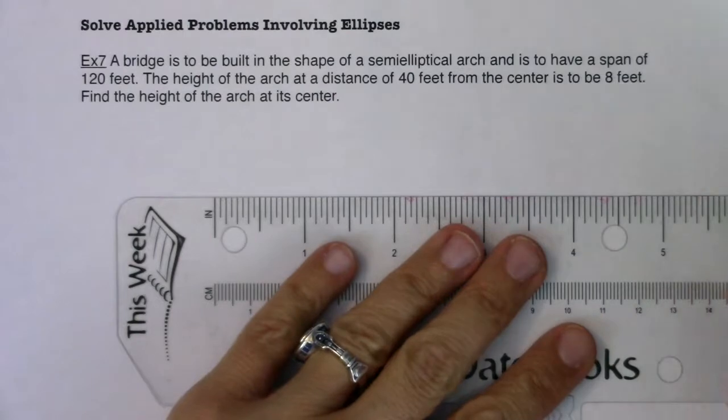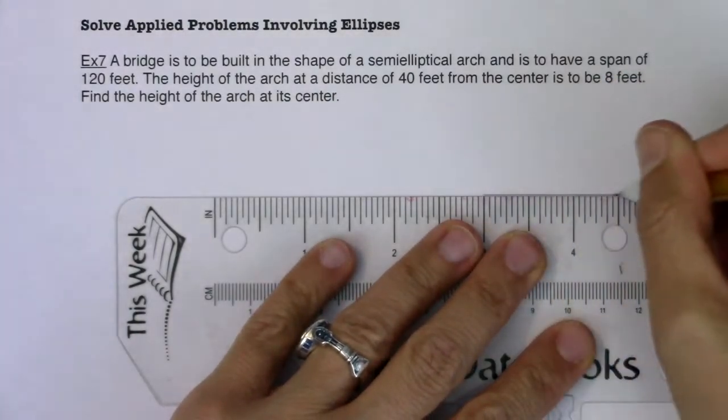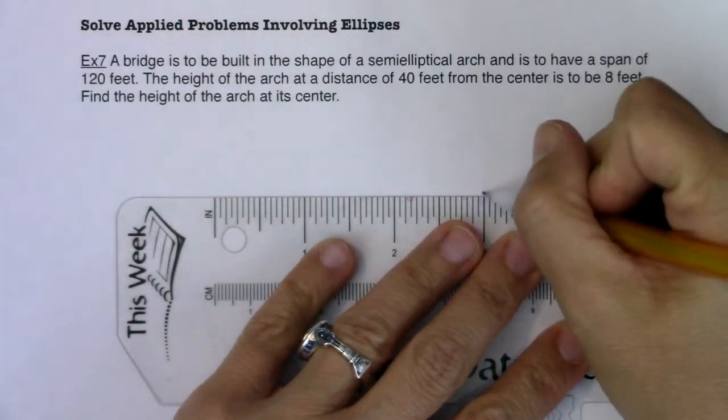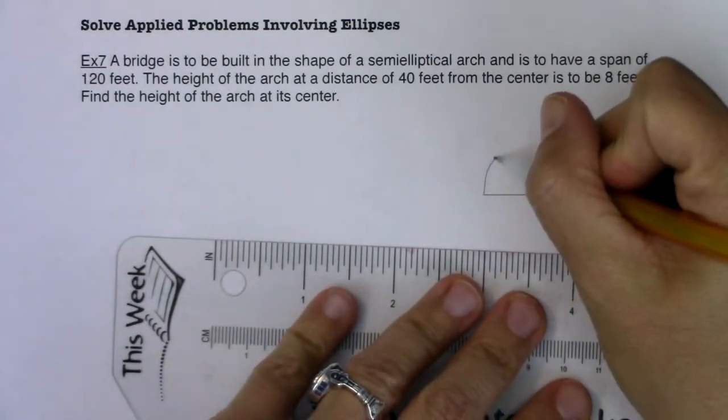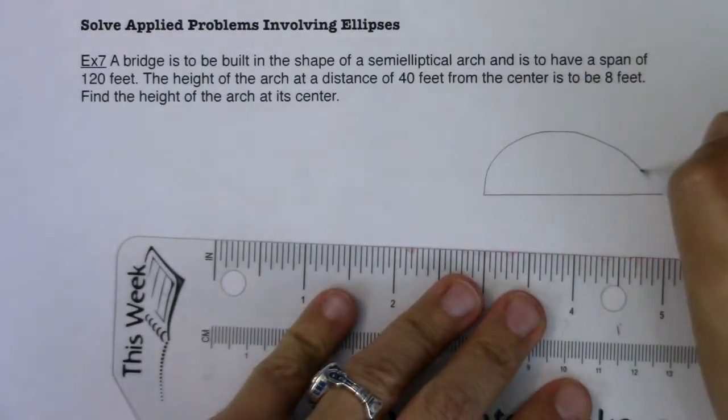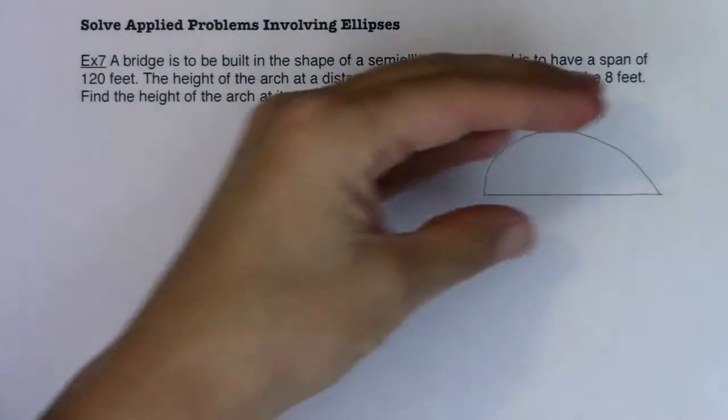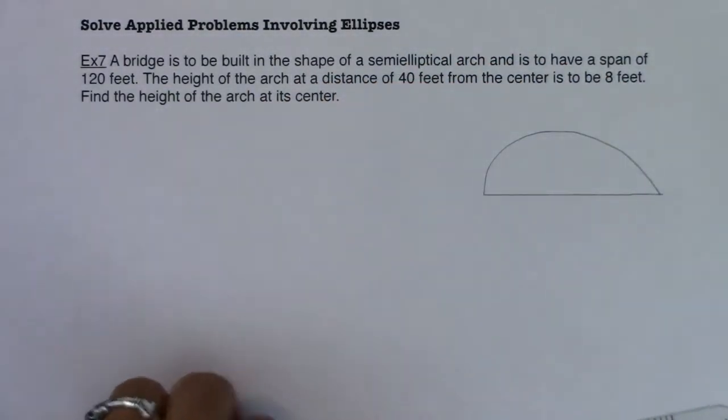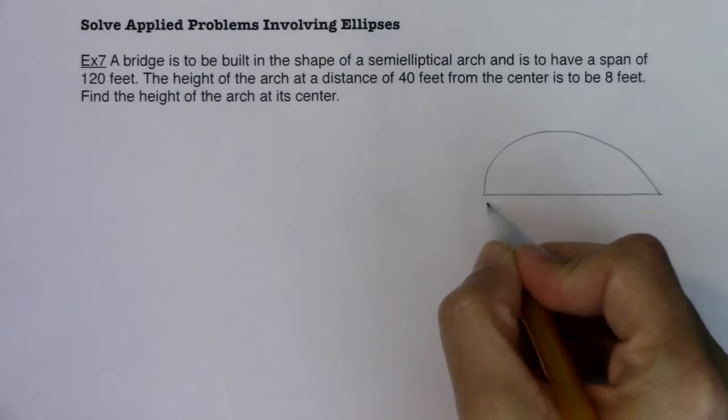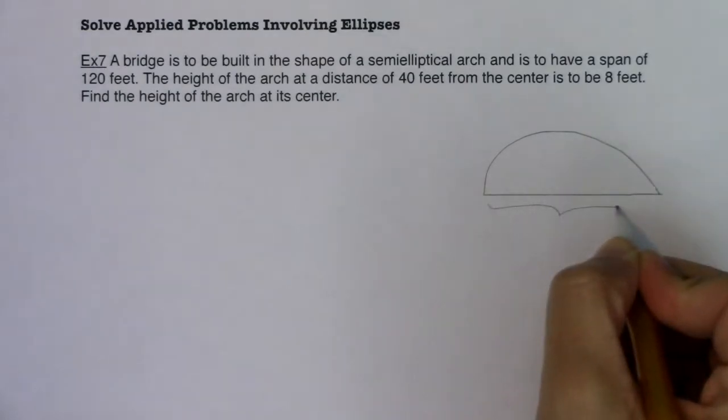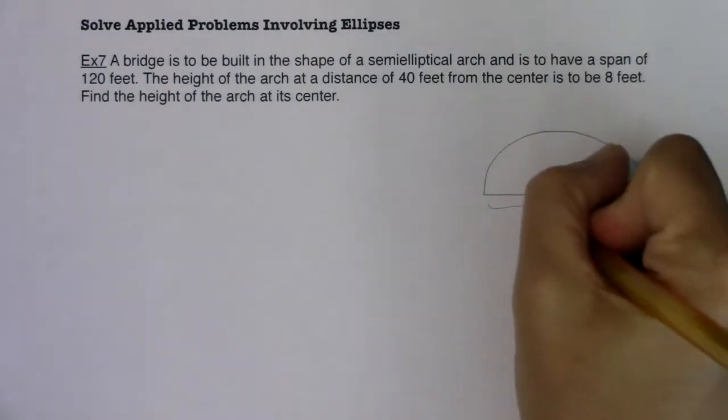Imagine you had a bridge right. There we go, that's not my worst ellipse also not my best, it looks a little slanty but that's okay. I've got a semi-elliptical arch and it says it's to have a span of a 120 feet so I know here we have a 120 feet.